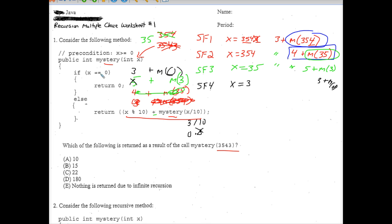0 comes in here and 0 is equal to 0, so 0 returns. So all of this turns into 0 in stack frame 5. Stack frame 5, x is equal to 0. That m parentheses 3 turns into a 0.